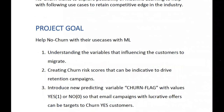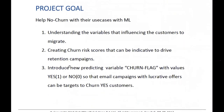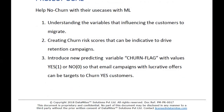The third goal is pretty straightforward: introducing a new predicting variable called churn flag with values yes and no — basically one and zero — which will predict that a particular customer is going to migrate to competitors next month, so that we can send lucrative offers via email or phone calls to those customers flagged as likely to churn.